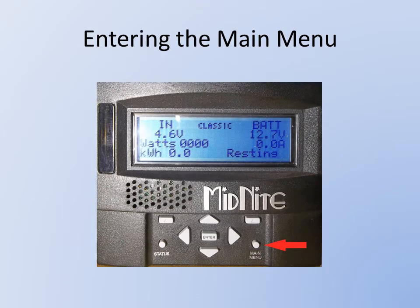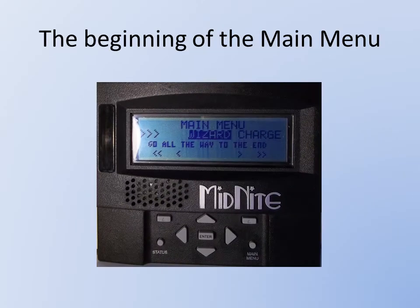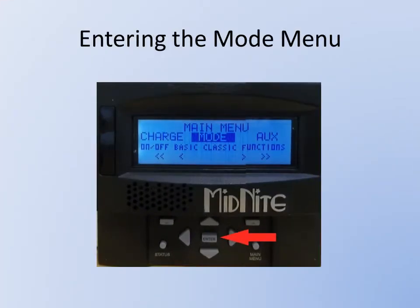Showing you the display of the Classic, the arrow is showing the main menu button. You'll need to click that main menu button repeatedly until Wizard is highlighted. Then you'll need to click the right arrow button to scroll over until Mode is highlighted and press the Enter button shown here with this arrow.